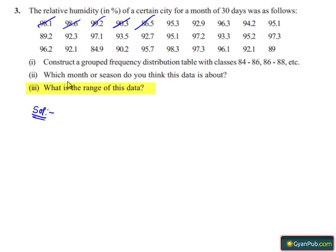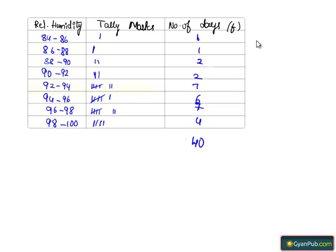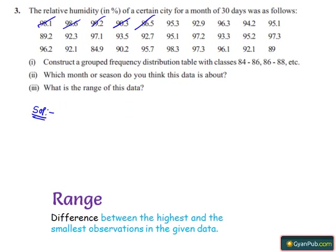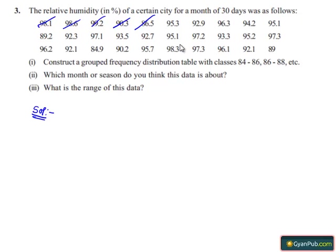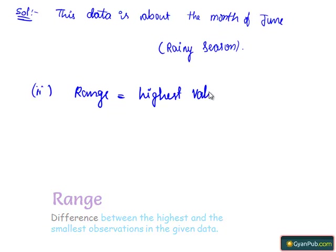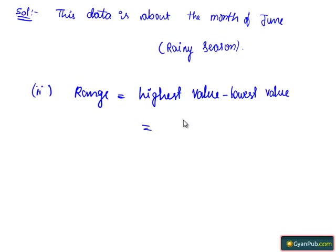Now let's see the last part: what is the range of this data? The range is the difference between the highest number and the lowest number. Here, seeing the tabular form, the highest number is 99.2. Range equals highest value minus lowest value, that is 99.2 minus 84.9, which equals 14.3 in percentage.